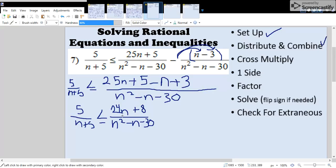Step 3, we're going to cross multiply. With the n plus 5 and the 24n plus 8, you're going to have to either use box method or FOIL to find the product.